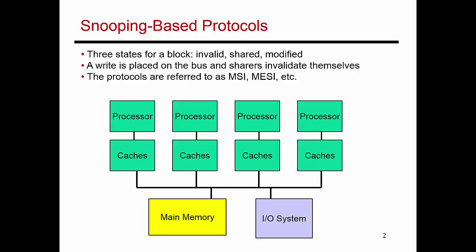What I'm showing here is what is referred to as a symmetric multiprocessor. You have a processor with some L1 or L2 caches — these are that processor's private caches. Similarly, you have processors P2, P3, P4, each with its set of private caches. And when you have a miss in the cache, you have to access your external memory system — a shared physical main memory system accessible through a shared bus.